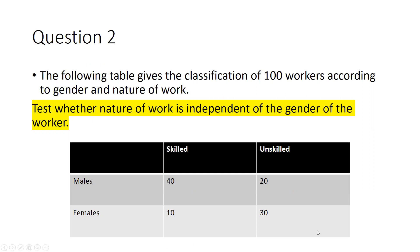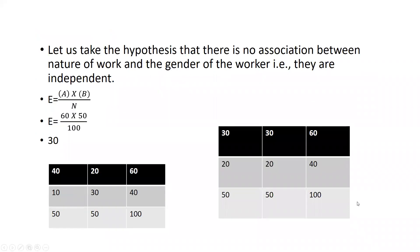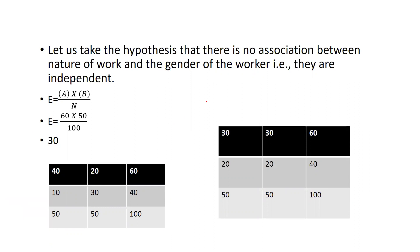Next, we come to how we are going to calculate the table values and observed values. We have created a hypothesis: there is no association between nature of work and the gender of the workers — meaning both are independent. That is my null hypothesis.